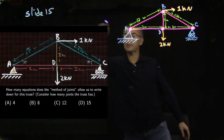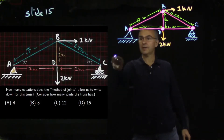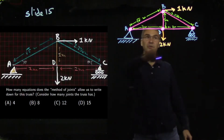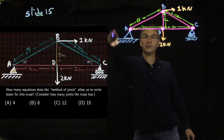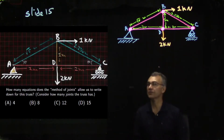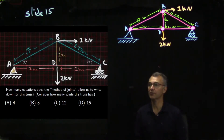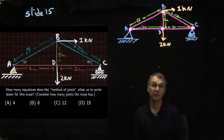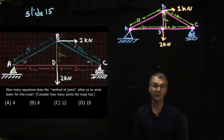Slide 15 shows an image of this truss, which I've redrawn on the board here. It asks: how many equations does the method of joints allow us to write down for this truss? We want to consider how many joints the truss has. You don't yet know what the method of joints is, so let's discuss that.